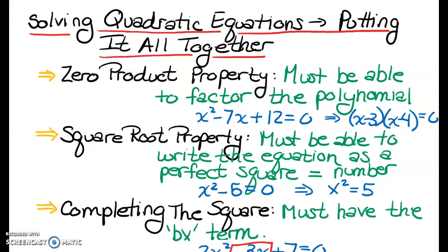Today we're going to take a look at solving quadratic equations using the four different methods we've learned this year. The very first method is the zero product property. Back in Chapter 6, we had polynomials that looked like this. In order to use the zero product property, the equation must be factorable — otherwise you can't use it.